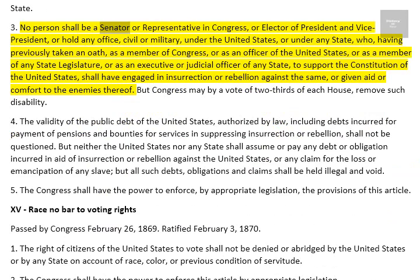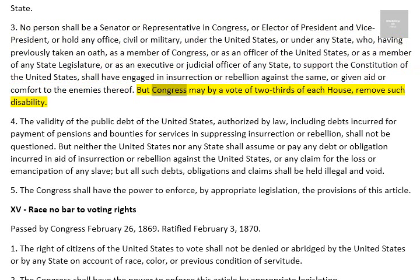3. No person shall be a senator or representative in Congress, or elector of President and Vice President, or hold any office, civil or military, under the United States, or under any state, who, having previously taken an oath as a member of Congress, or as an officer of the United States, or as a member of any state legislature, or as an executive or judicial officer of any state, to support the Constitution of the United States, shall have engaged in insurrection or rebellion against the same, or given aid or comfort to the enemies thereof. But Congress may by a vote of two-thirds of each House remove such disability.